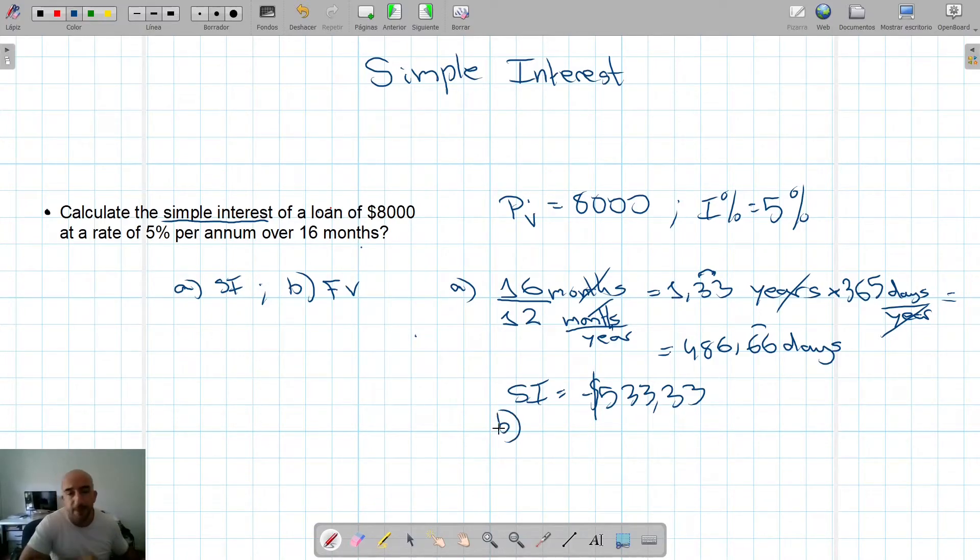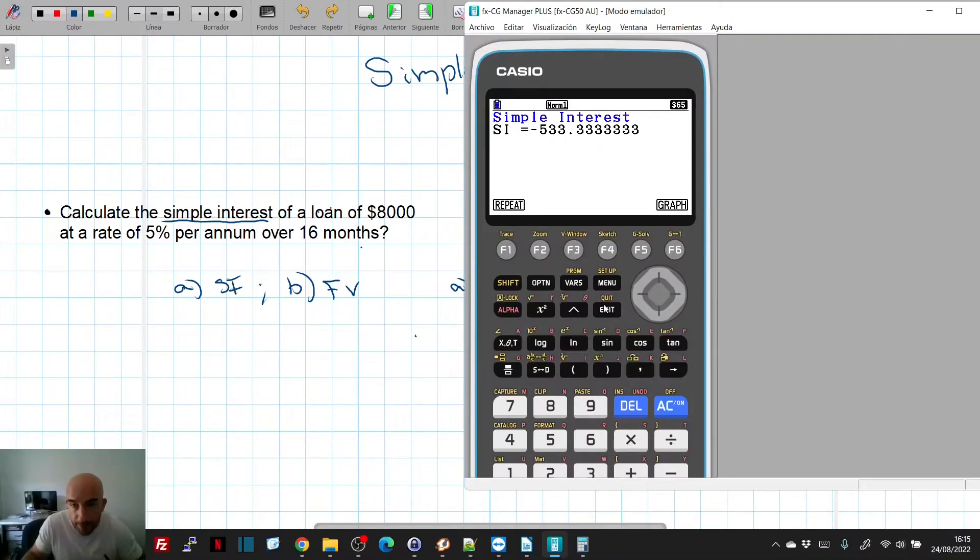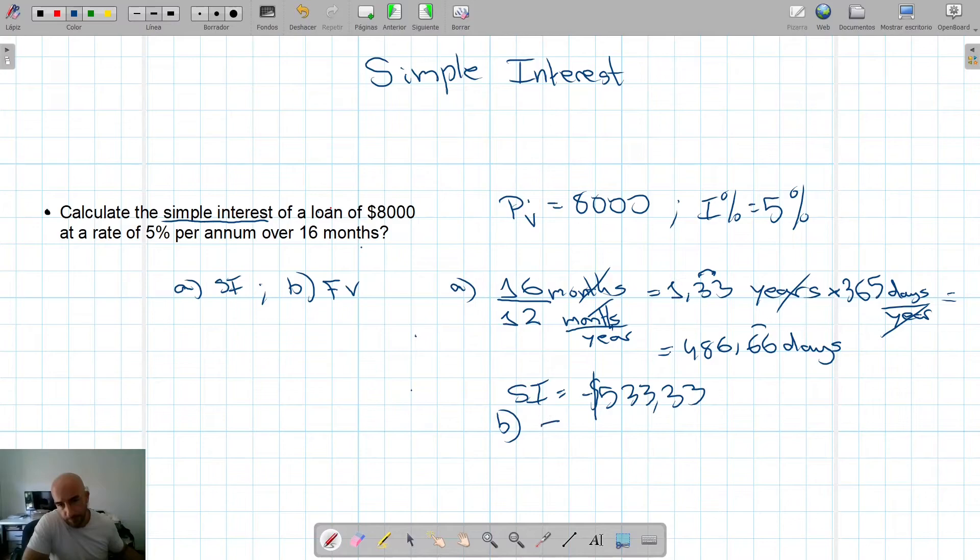And B, what would be the final value? Well, it would be very easy because we would just need to calculate 8,000, which is the money I gave, plus the interest that I've paid, which is 533. So the final value I would need to pay would be 8,533. But we can do it in the calculator. You just get back and click on SFB and you see that if I've asked for a loan of 8,000 euros at that simple interest, in the end, I will have to return, and that's why it's a minus, 8,533.33 dollars.